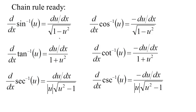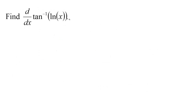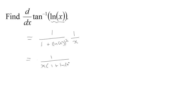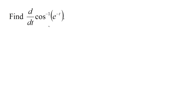Let's work some examples using the chain rule. Here we have the derivative of arctan(ln x). The derivative of arctan is 1 over 1 plus the variable squared, so we plug in ln(x) and square it, then multiply by the derivative of the inside. The derivative of ln(x) with respect to x is 1/x, so we get 1/x times 1 over 1 plus (ln x) squared.